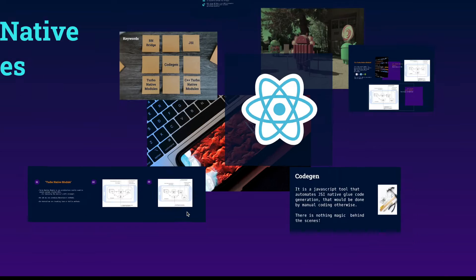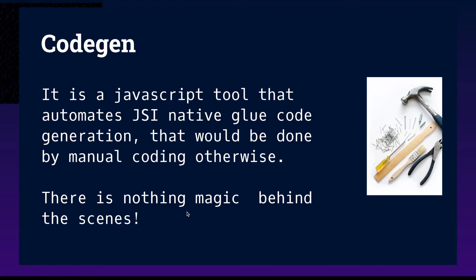So let's talk about CodeGen. CodeGen is a JavaScript-based tool to create the glue code between the JavaScript engine and the native side. It is basically generating the source code that we can use to actually create our own native codebase, and together we are creating that glue between the JavaScript engine and native side. There is no magic about CodeGen — it is a complex tool, but the work that CodeGen is doing is simple: it is generating the glue codebase.